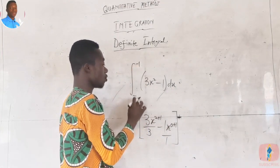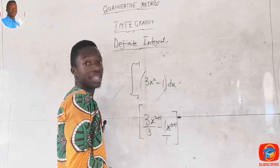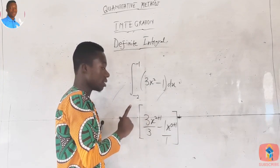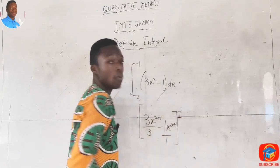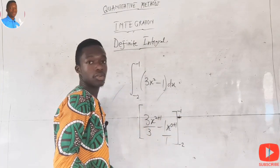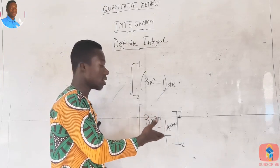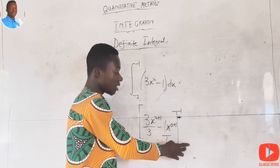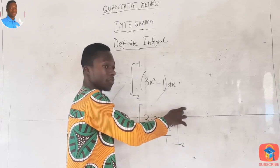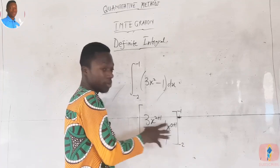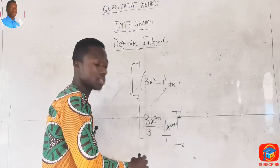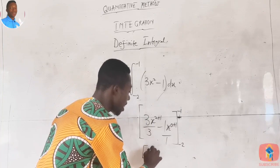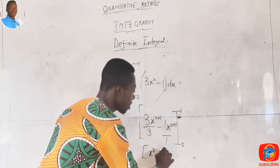The upper limit is negative one and the lower limit is negative two, because negative one is greater than negative two — the upper limit must always be greater than the lower limit. After simplifying, the threes cancel, giving us x³ - x, evaluated with the limits negative one at the top and negative two at the bottom.